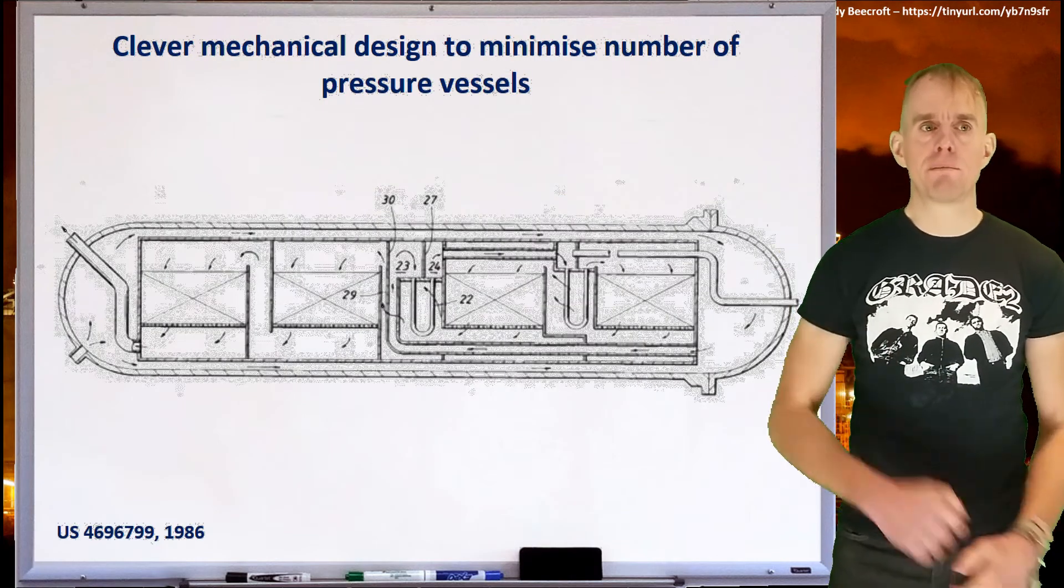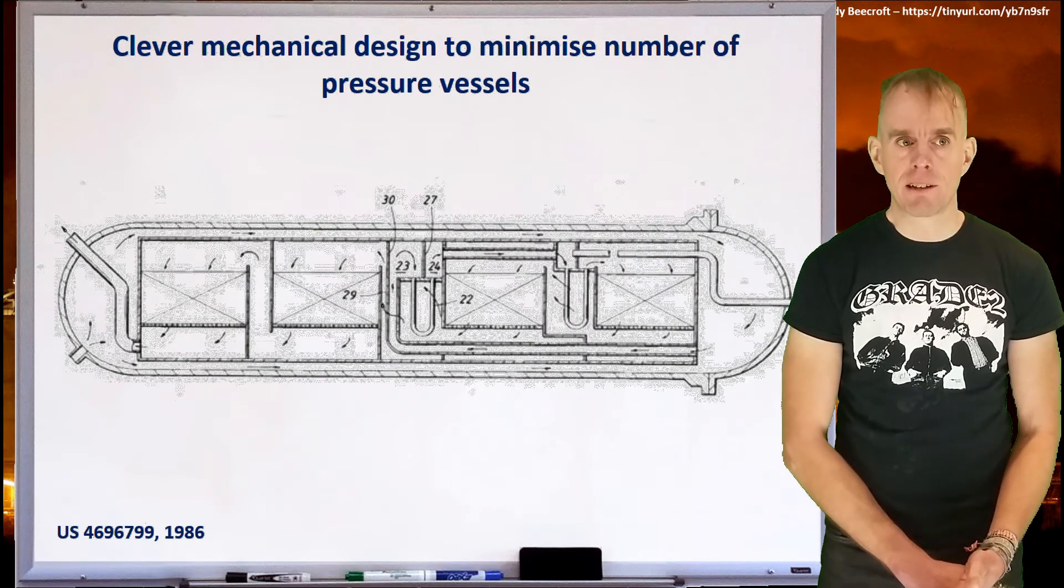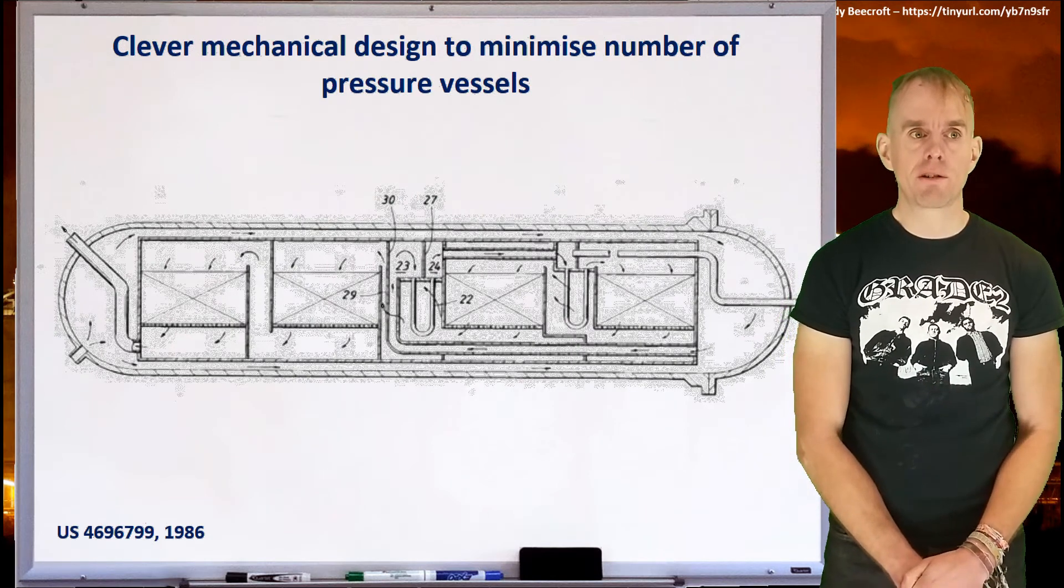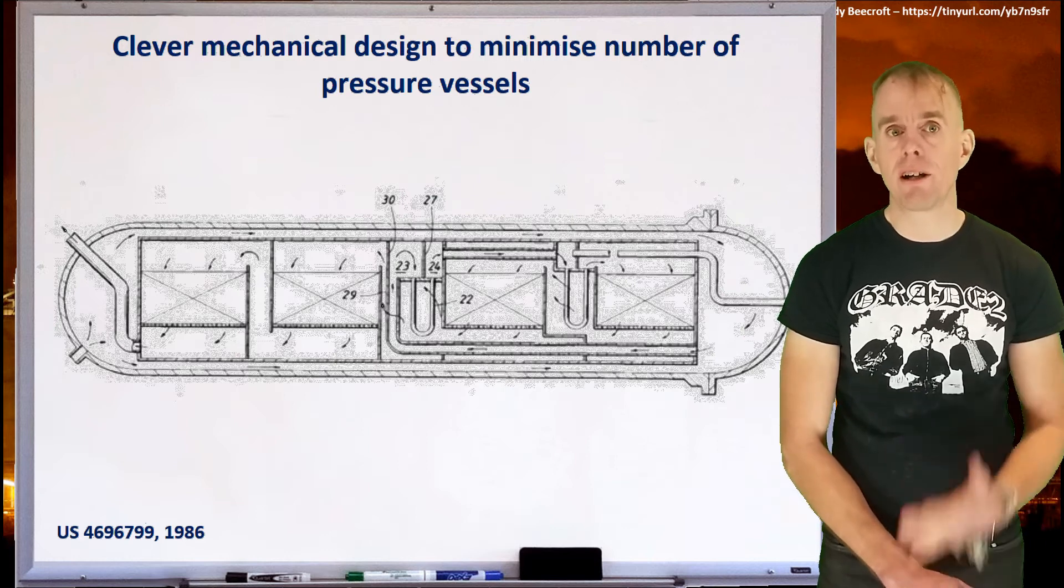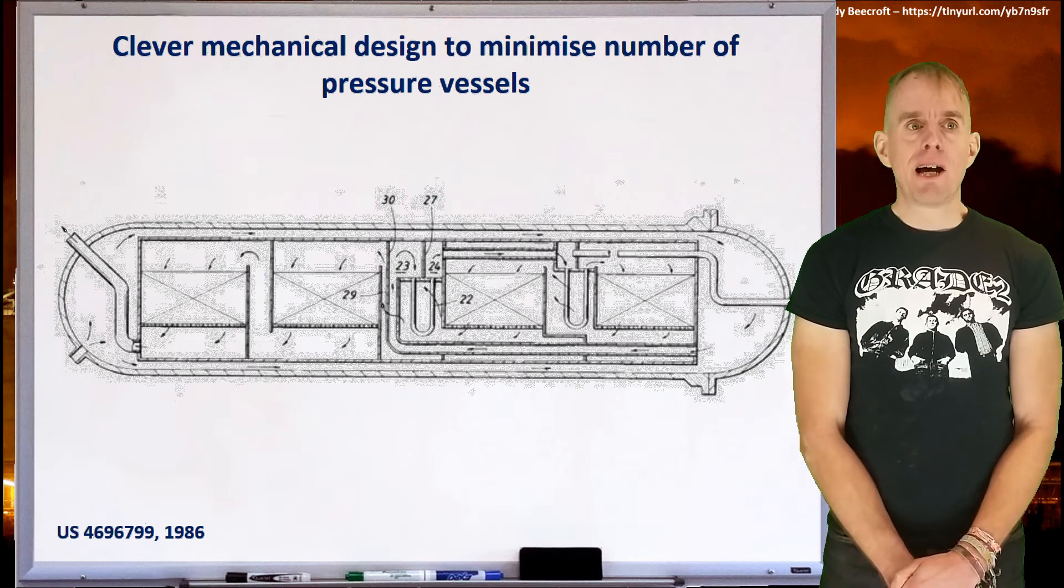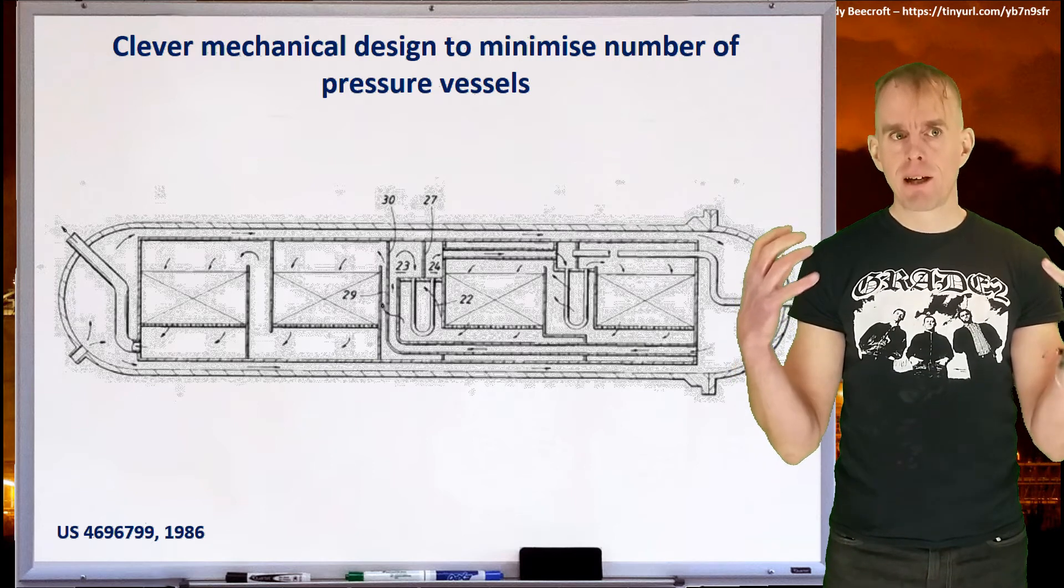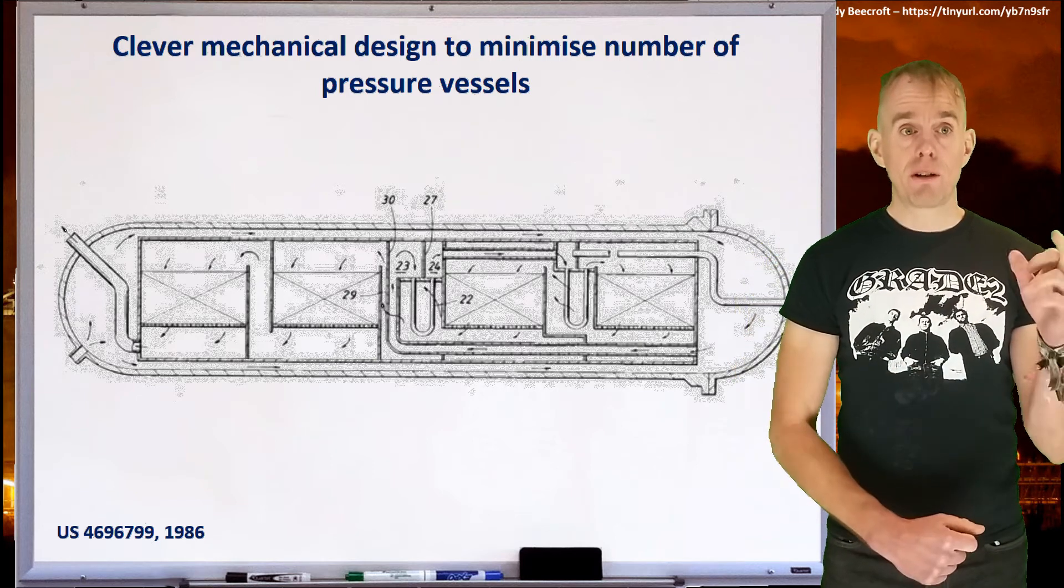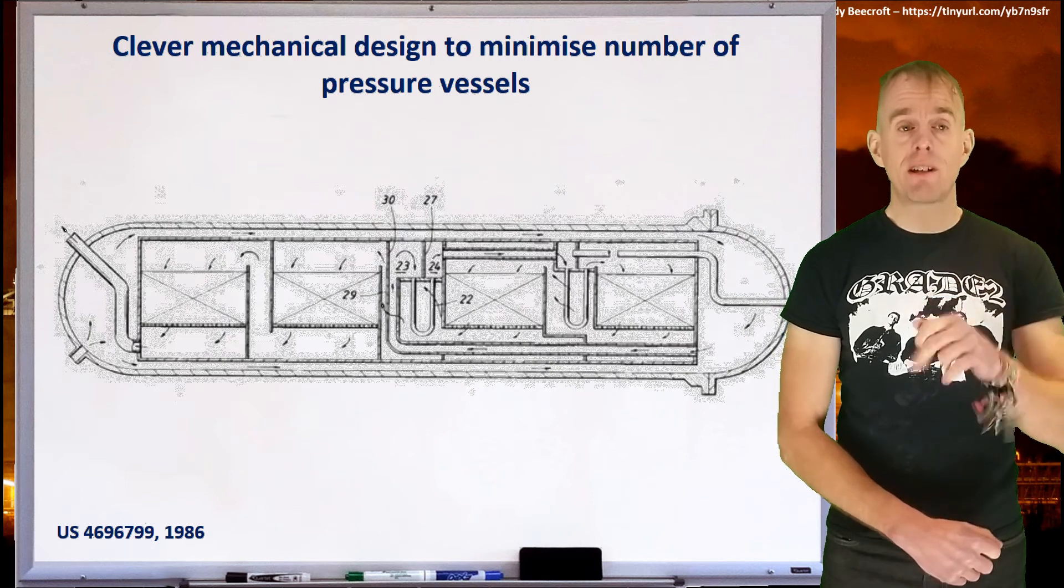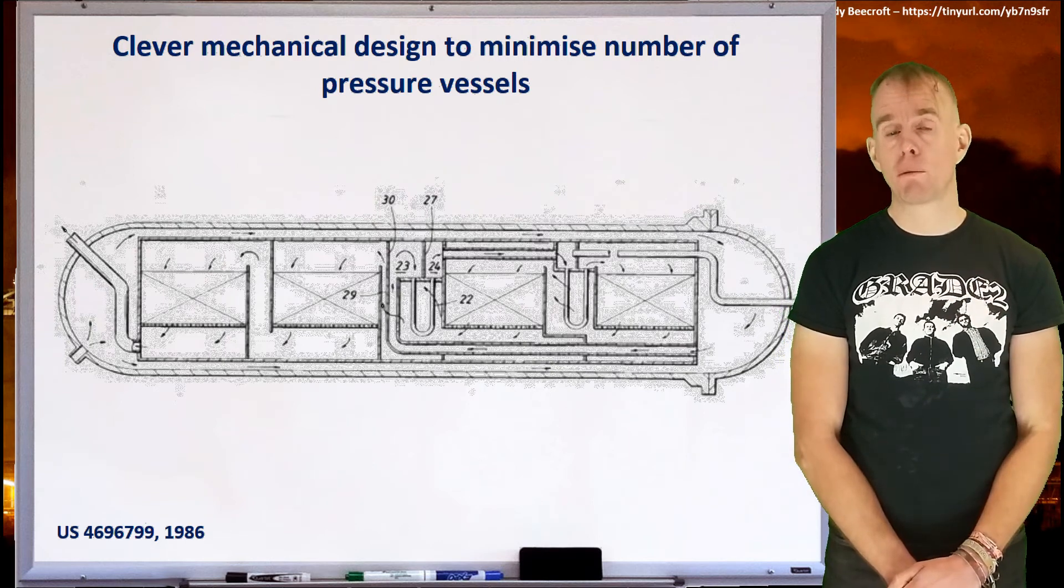So let's look at a very neat mechanical design for a chemical system such as this. So here on my whiteboard is a picture from a patent, a patent from 1986. It's a US patent, US 4696799. And you can go and look that up. And what we have here is a single pressure vessel that incorporates one, two, three, four, five, six, effectively seven different unit operations.